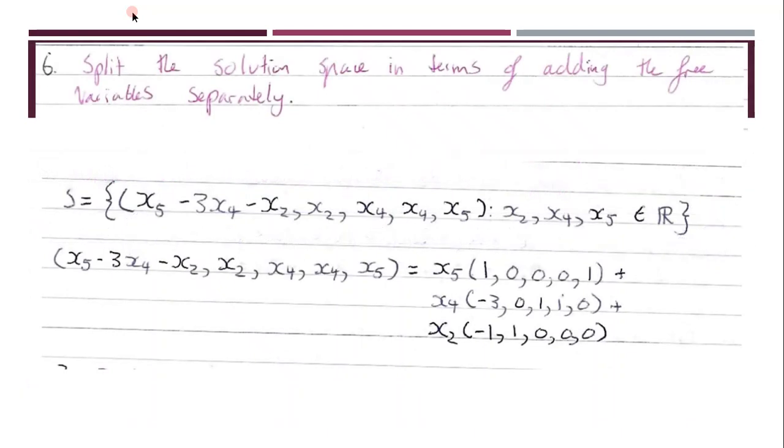Then you want to split the solution space in terms of adding the free variables separately. So what you do is you pull out all of the free variables, and then you multiply it by the coefficients of the coordinates.